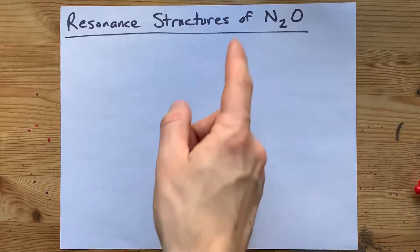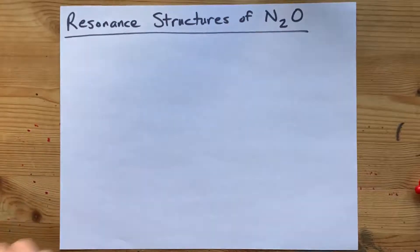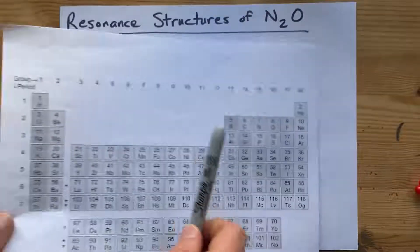We're going to draw the Lewis structures of N2O, dinitrogen monoxide, but first we've got to try to draw the Lewis structure itself.